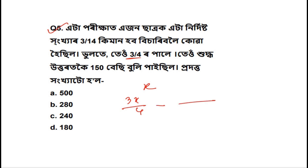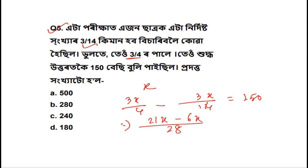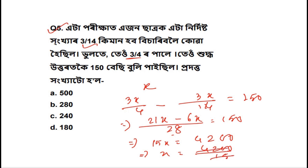Minus 3 by 14, 3x by 14 equal to how much? 150, right? 28. 21x minus 6x equal to 150. 21x minus 6x equal to 15x. 28 into 150 — that's how much? 4200. How much? x equal to 4200 by 15. Cancel. 280. Option B: 280.